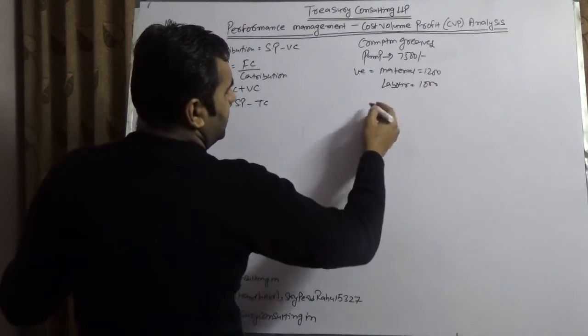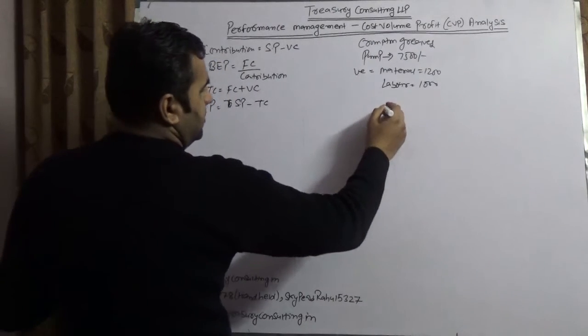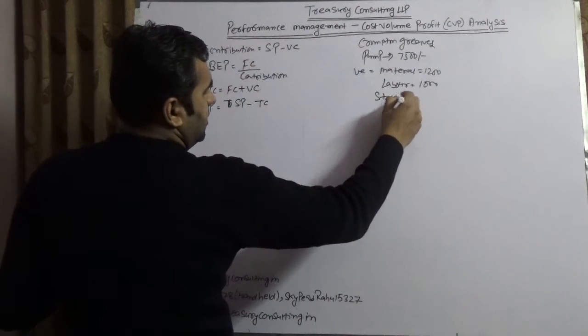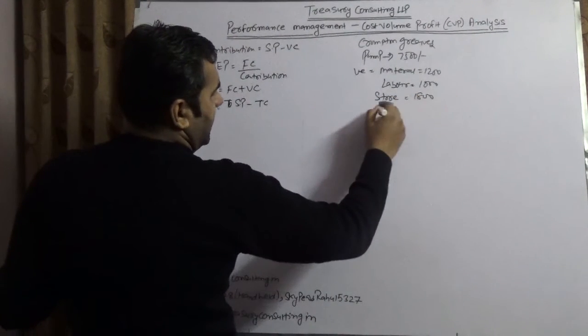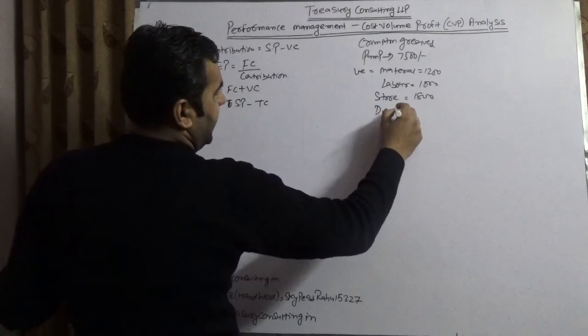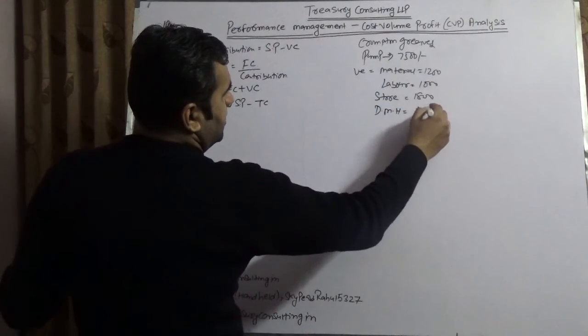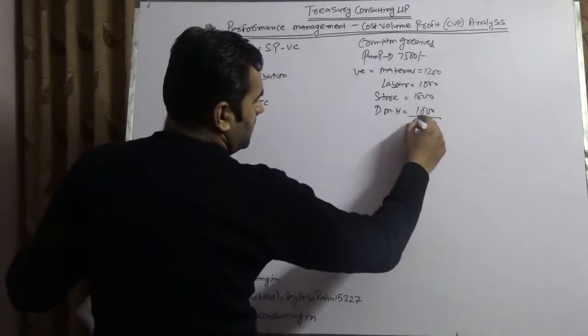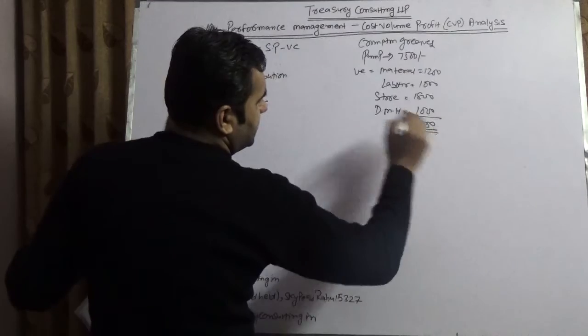$1,000, store $1,800, and direct material handling $1,000. Assuming this is $5,000 total.